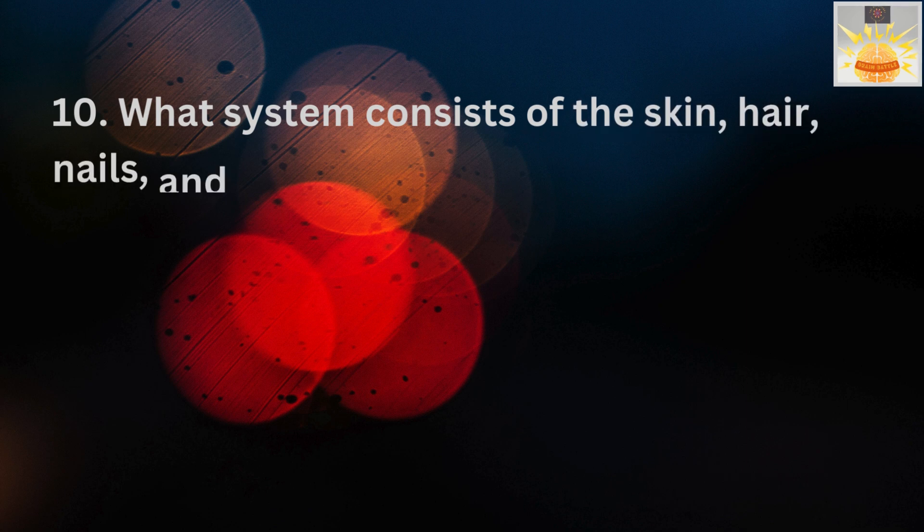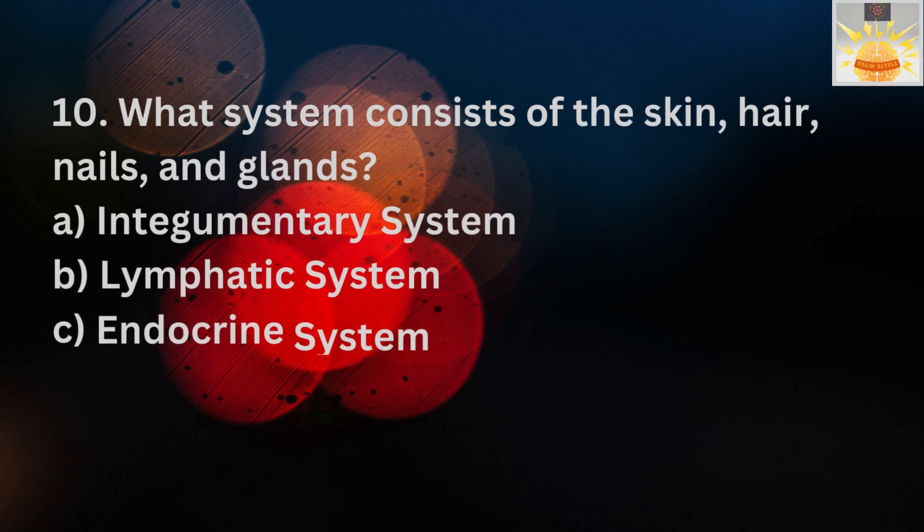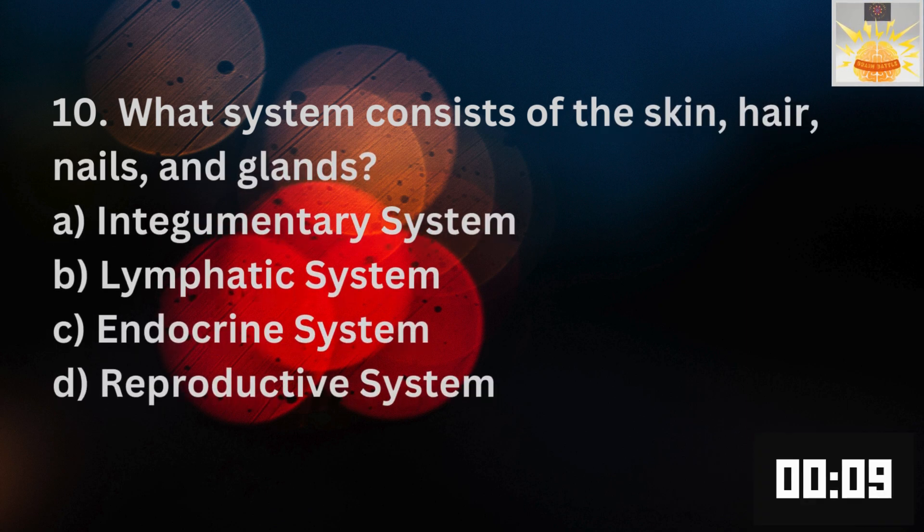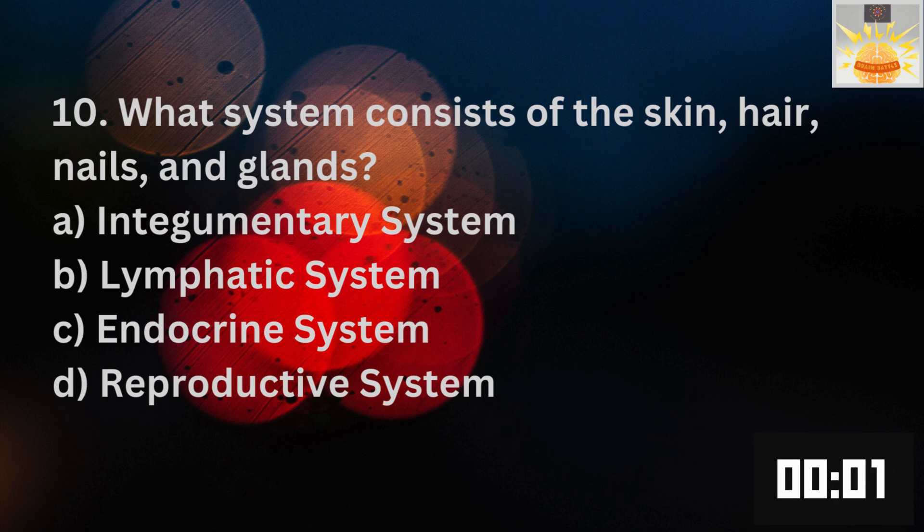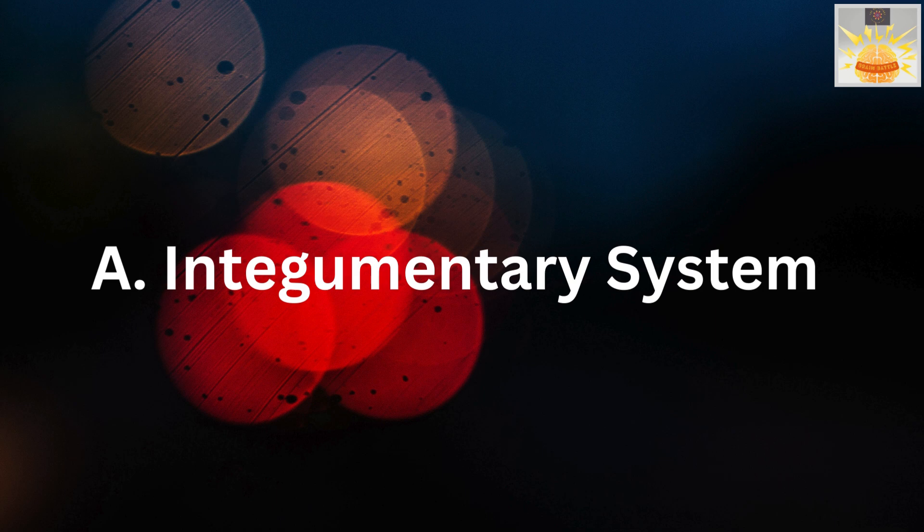Now the next question, what system consists of the skin, hair, nails, and glands? A. Integumentary system. B. Lymphatic system. C. Endocrine system. D. Reproductive system. The answer is A. Integumentary system. If you got that right, I am proud of you. In fact, I never knew this when I was a child. Well done.